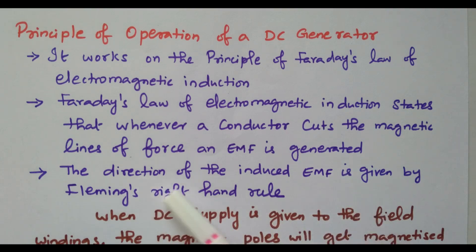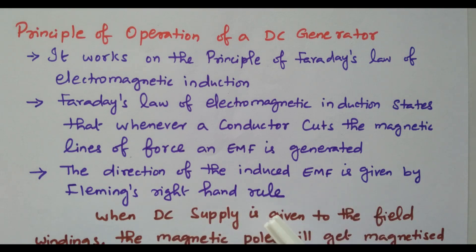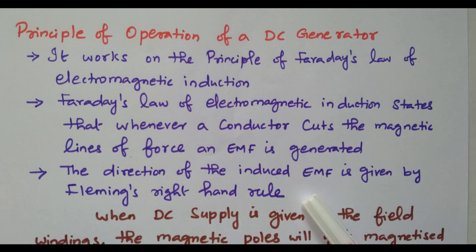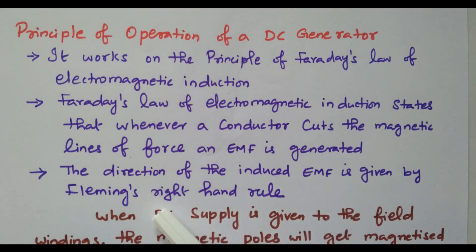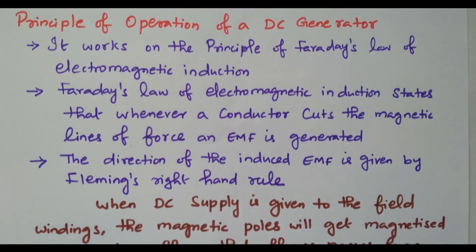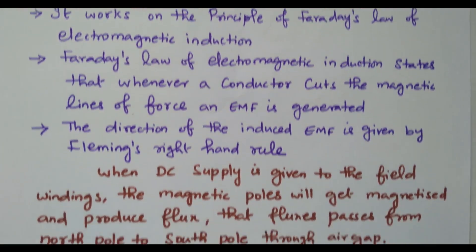The direction of the induced EMF is given by Fleming's right-hand rule. Fleming's right-hand rule gives the direction of induced EMF. Fleming's left-hand rule applies to the DC motor. For the generator, Fleming's right-hand rule is applicable.